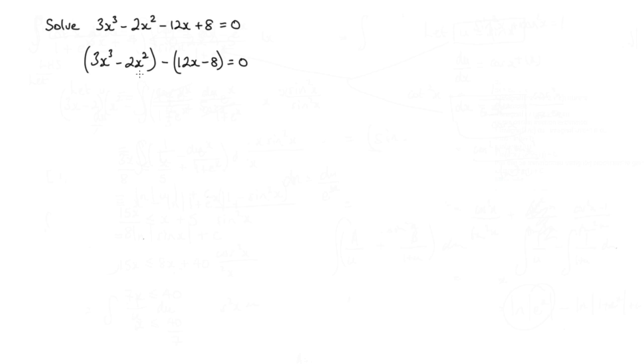Now, when I factor out 3x minus 2 from here, I'll be left with x squared times 3x minus 2. If I do the same here, I'll be left with 4 times 3x minus 2. That's still equal to 0.